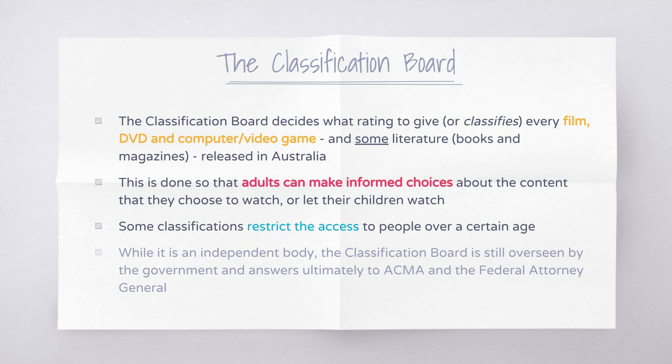The Classification Board decides what classification — or rating — to give every film, DVD, computer video game, and some literature in Australia. This is done so that adults can make informed choices about the content they choose to watch, or what they let their children watch. Some classifications restrict access to people over a certain age, while others are advisory to let audiences know what might be in the content.